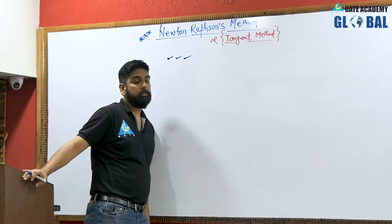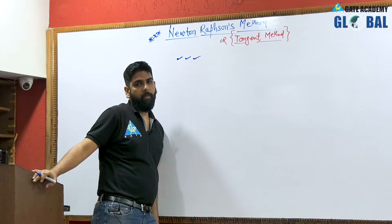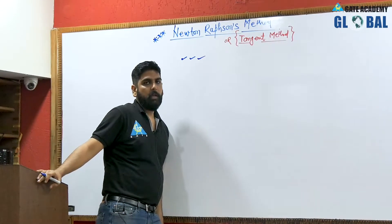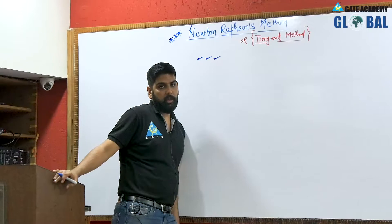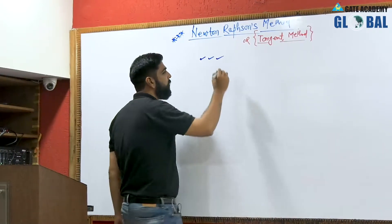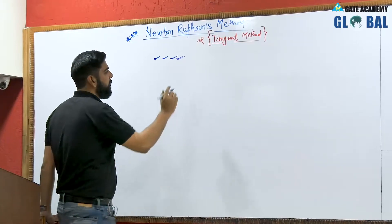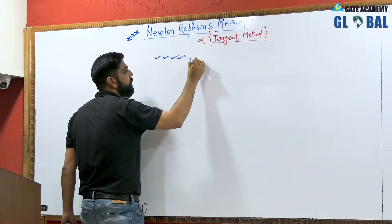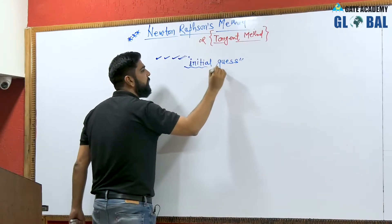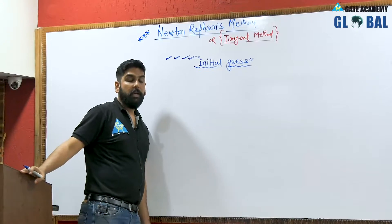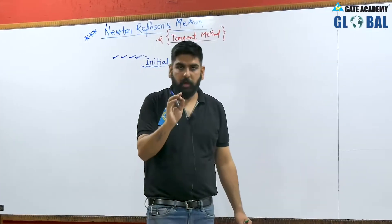The third important point is the order of convergence for the Newton-Raphson method, which is quadratic — that means the order is two. Fourth, the Newton-Raphson method is really sensitive about the initial guess.